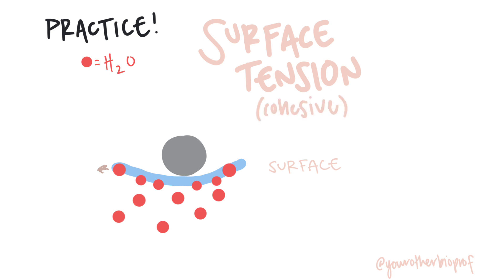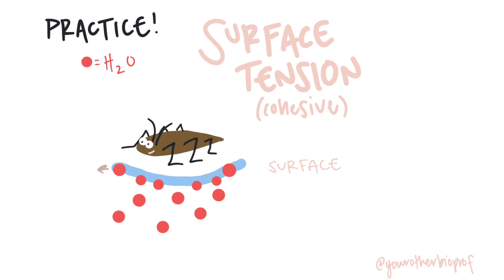So is surface tension an adhesive property or a cohesive property? Cohesive, right? We've only got water interacting with other water molecules here — water sticking to other water, that's cohesion. This is the property that allows insects to walk on top of water, for example.